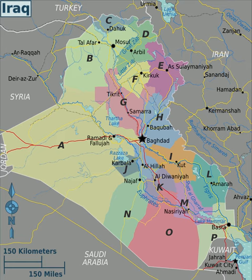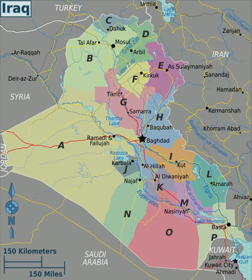Iraq has the northwestern end of the Zagros mountain range in the eastern part of the Syrian desert. Rocky deserts cover about 40% of Iraq. Another 30% is mountainous with bitterly cold winters. The north of the country is mostly composed of mountains, the highest point being at 3611 meters, unnamed on the map, but known locally as Chika Dar, meaning black tent.